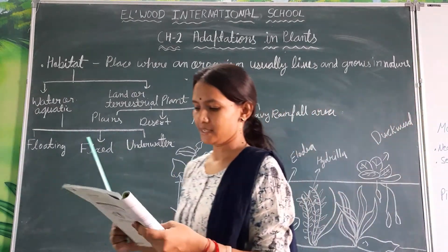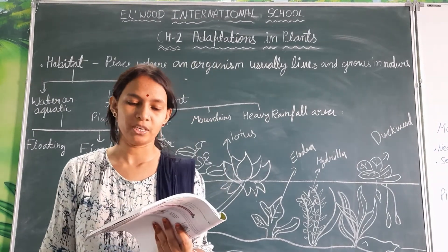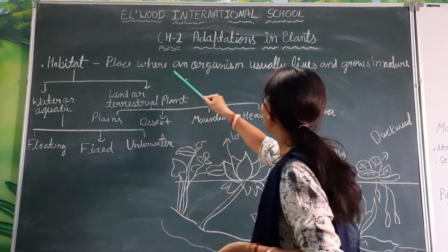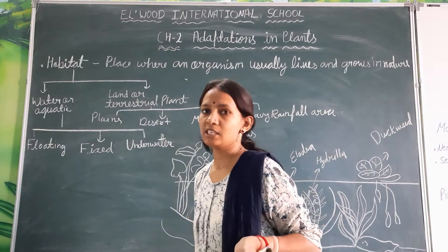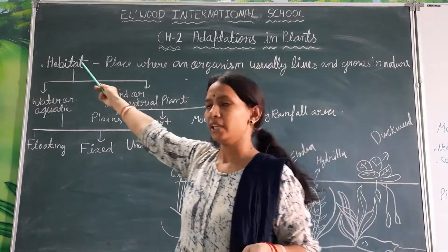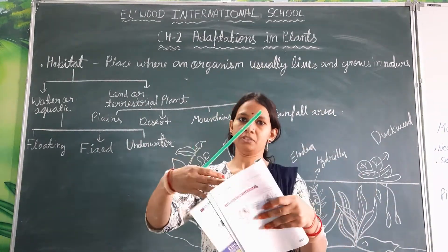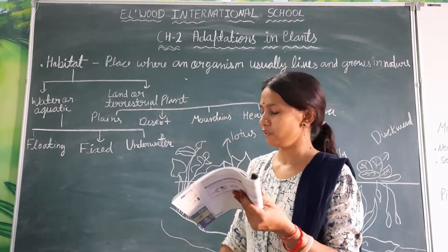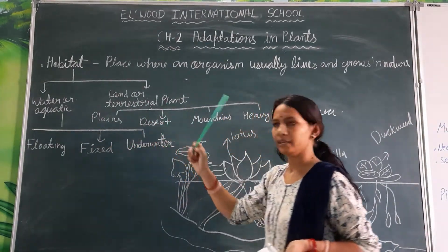Plants grow in different places. They can be found in dry sandy deserts, hilly areas, valleys, high mountainous areas, and even in water. The place where an organism usually lives and grows in nature is called a habitat. Habitat can be a small patch of garden or a big forest. Depending on the habitat they live in, plants can be divided into two parts: water or aquatic plants and land or terrestrial plants.